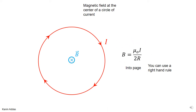A simpler way to find the direction is to curl your fingers in the direction of the current; your thumb points in the direction of the magnetic field. But the rigorous method is to compute ds cross r-hat for each element. If the current goes anti-clockwise, ds changes direction, so the magnetic field is out of the page. The magnitude remains μ₀i/(2r) regardless of direction.